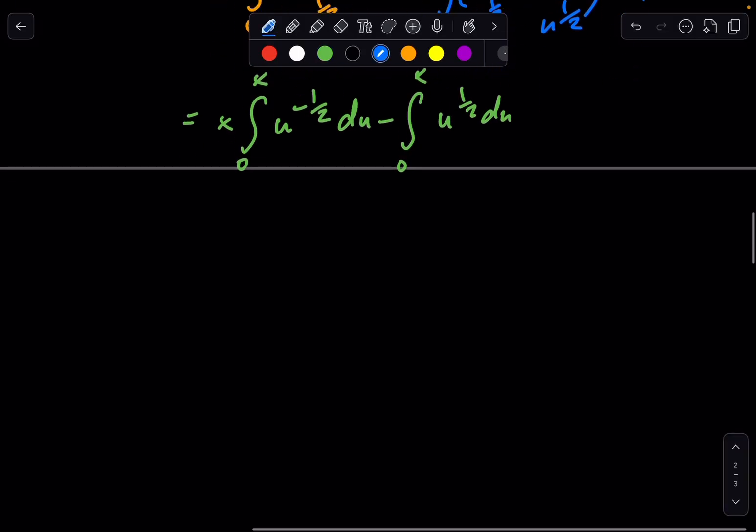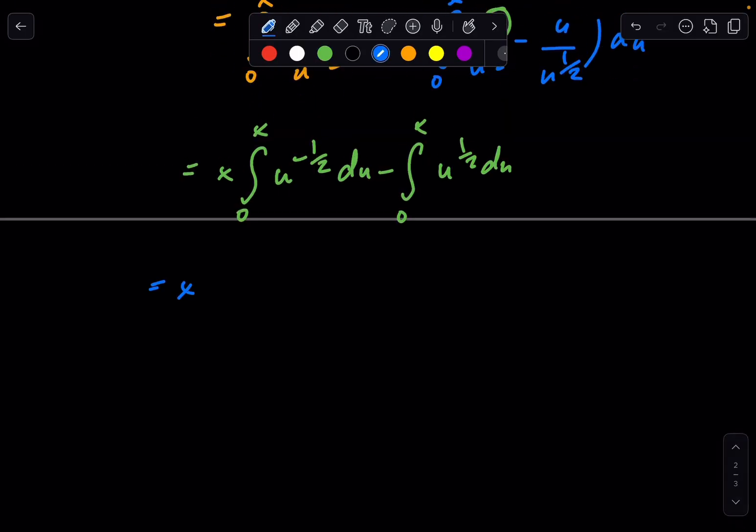So, now we can compute this. We have, simply, x times, what is the integral of u to the negative 1/2? We add 1 and divide by the new exponent. So, then we get, I get to use brackets here, 2u to the 1/2, bounded by 0 to x, minus, and let's integrate this, you have u to the 3/2, divided by 3/2, which becomes times 2/3, bounded by 0 to x.